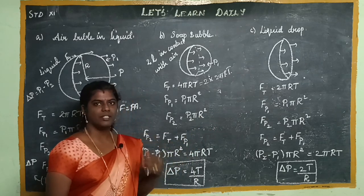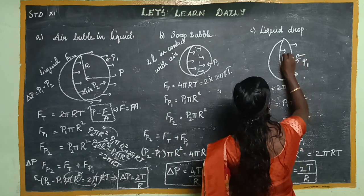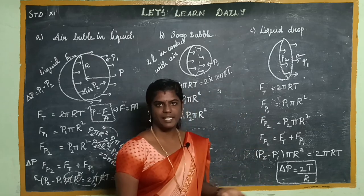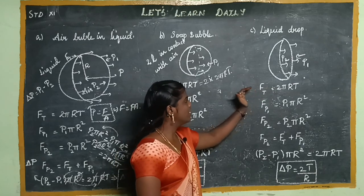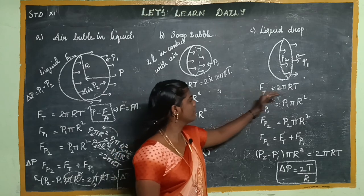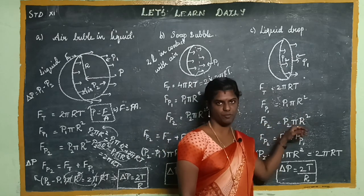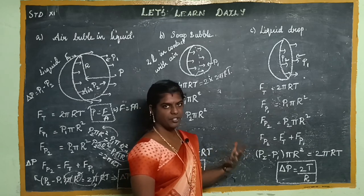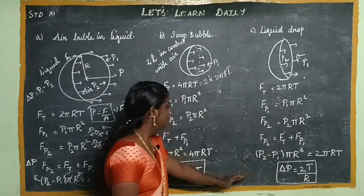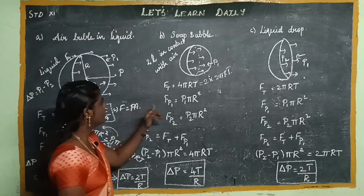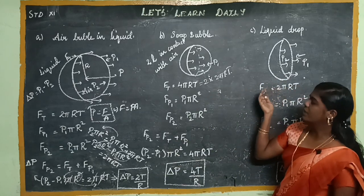Now, liquid drops. A liquid drop is normal — it has a single liquid surface. Applying the same method: the force due to surface tension on the outside, with outside pressure P1·πR² and inside pressure P2·πR². In equilibrium, rearranging gives ΔP = 2T/R. So the excess pressure values: air bubble = 2T/R, soap bubble = 4T/R, liquid drop = 2T/R.